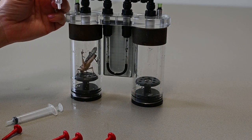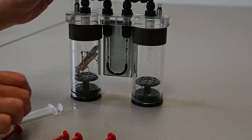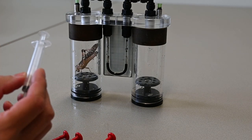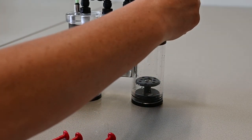One syringe is filled with 2 ml of air and attached to the system. The other one on the right side is filled with 0 ml of air.